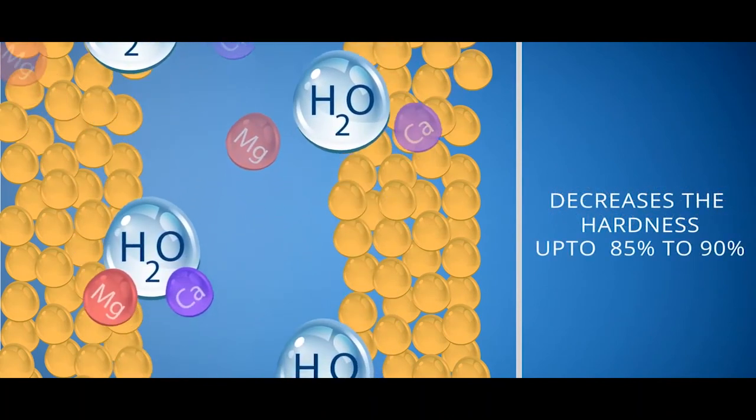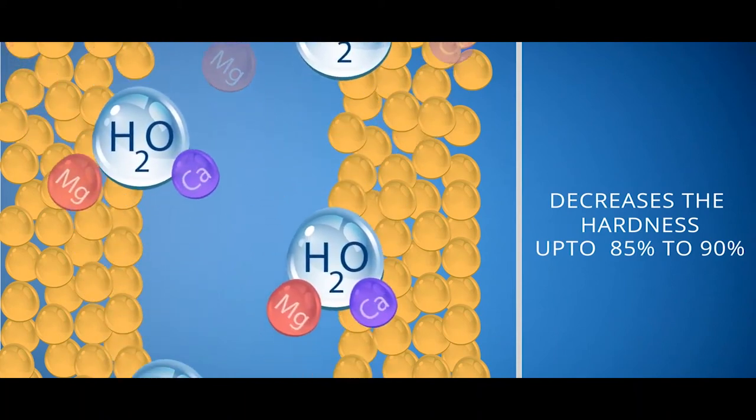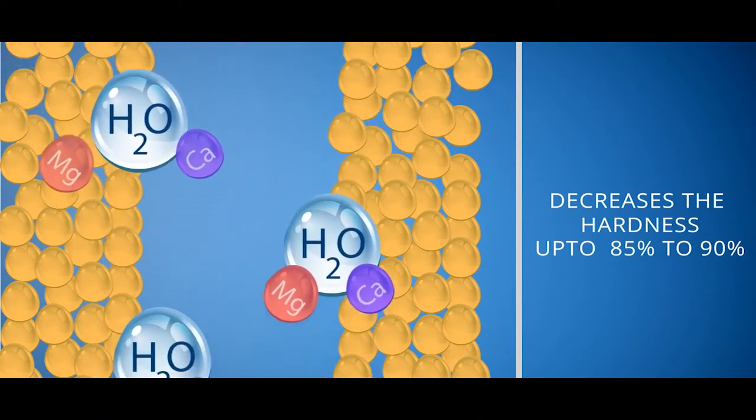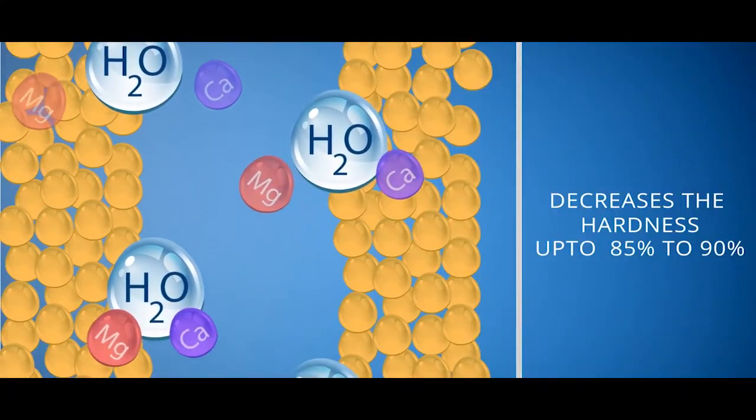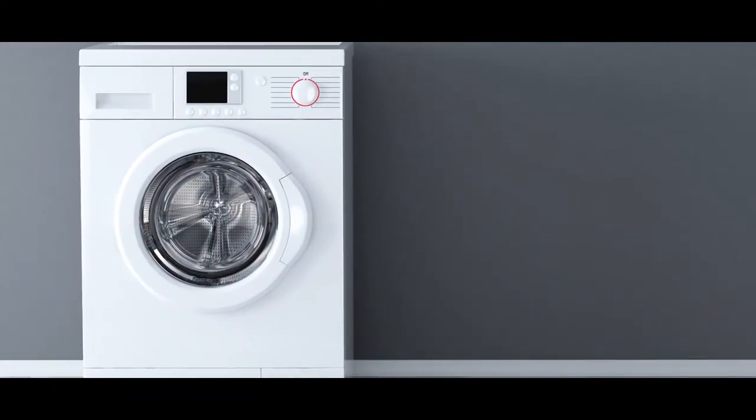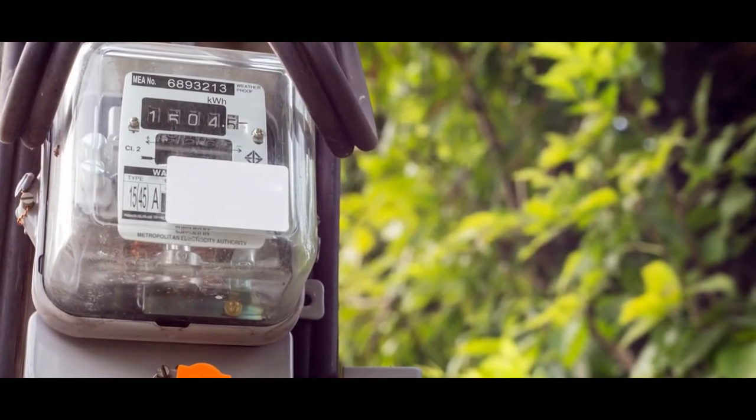LivePure resin effectively functions against hard water and decreases hardness up to 85 to 90% which makes your water soft and useful. It increases the life of your valuable appliances and decreases your electricity bills.